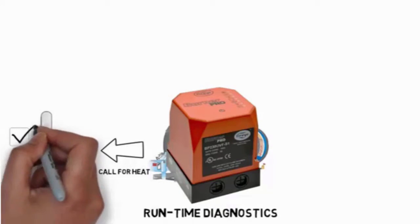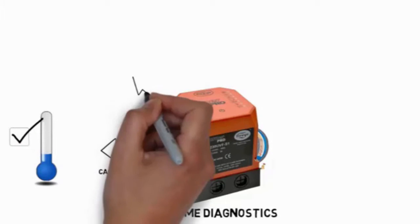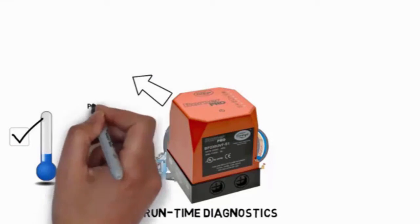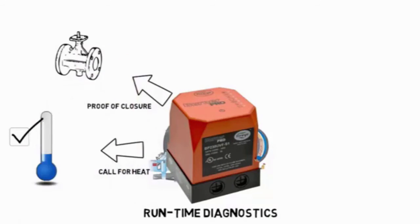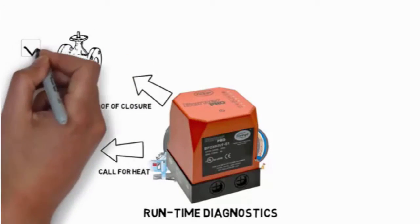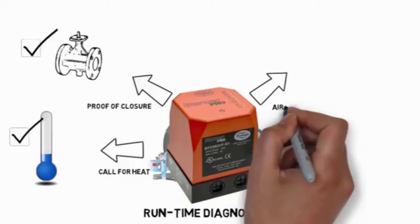the system turns on the combustion air blower and commands the actuator to move to the purge position. Proof of valve closure checks for wiring problems or faulty fuel valves. Air flow proving cycle ensures a proper combustion environment.